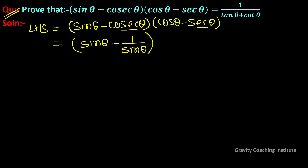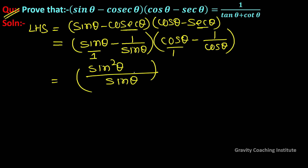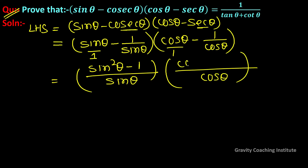So sin θ minus 1/sin θ, and cos θ minus 1/cos θ. We substitute and multiply through sin θ and cos θ. After simplification, this gives us cos²θ minus 1 in one term.